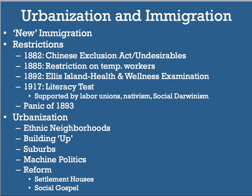Because of these issues, we see pushes for reform. One example is settlement houses — like Jane Addams' Hull House in Chicago — which teach English to immigrants, job skills, and American politics, giving them resources so they don't need to rely on the political machine. We also see the creation of the Social Gospel, linking being a good Christian with the progressive reforms of Period 7 — applying Christian ideals of caring for your neighbor to society's problems. Both are early examples of reform responses to urbanization and immigration.